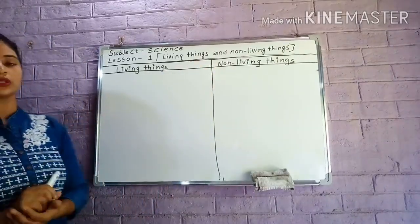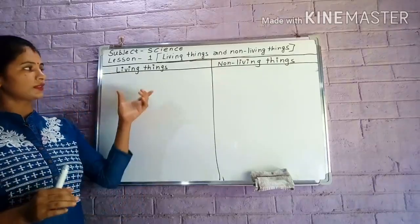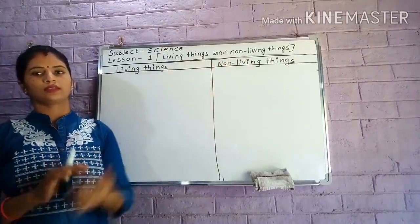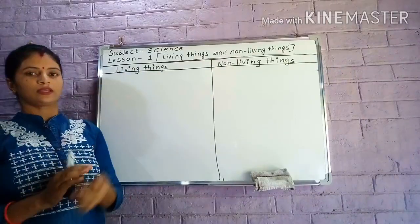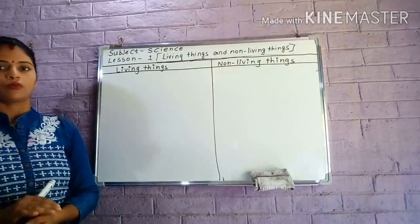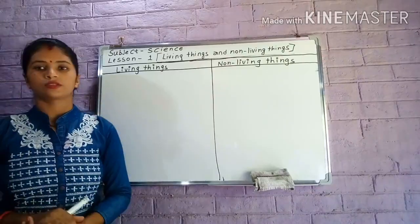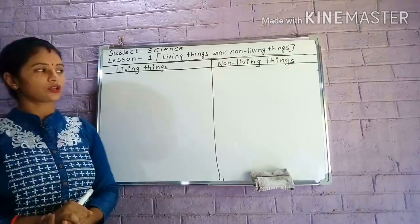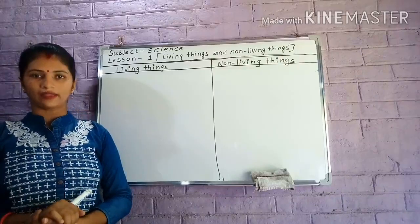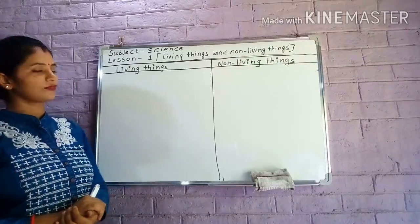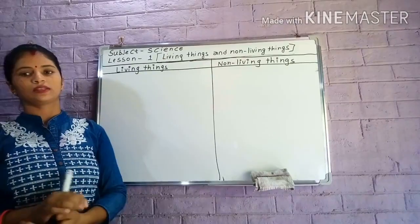First of all, you need to understand the meaning of living things and non-living things. Let me explain. What are living things? Living things means those things which are alive, which have life in them. They are called living things.